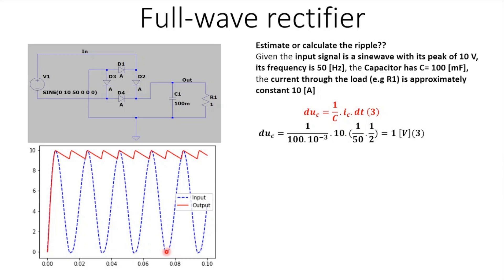We can estimate the time needed as half a period — from positive peak to negative peak. One period is 1/50 s, so the half period is 1/(2×50). Putting this into the formula gives a ripple of 1 volt on the capacitor output voltage. Let's now check this with simulation.